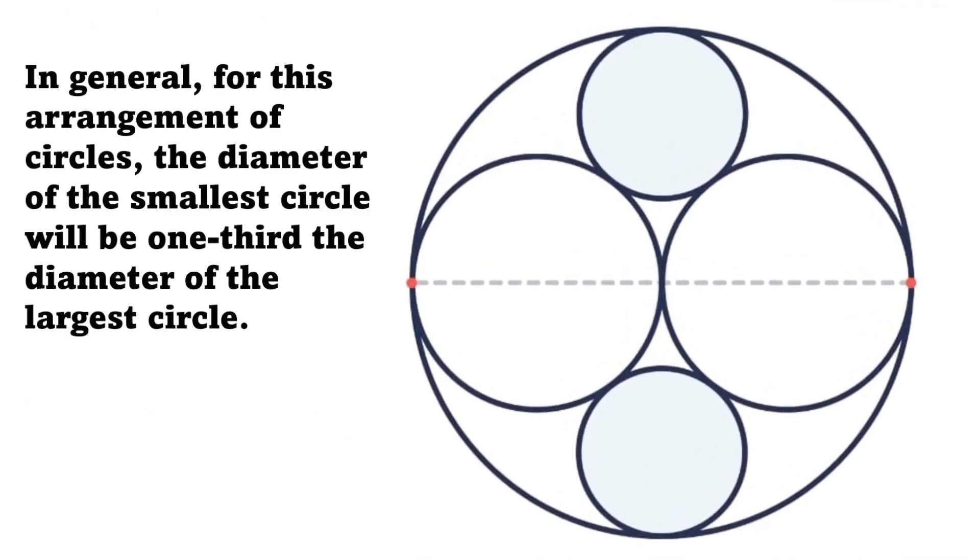One last thing I just want you to notice: in general, for an arrangement of circles like this, the diameter of the smallest circle will be one third the diameter of the largest circle. As we previously saw, in other words, 16 is one third of 48.